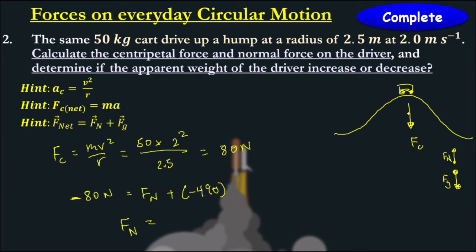Our centripetal force is also negative because it's in the opposing direction of our normal force. So our normal force is 410 newtons. Now our normal force is smaller than our gravitational force, so our apparent weight is decreased in this scenario here.